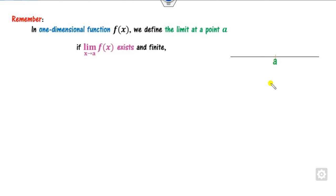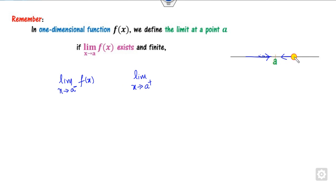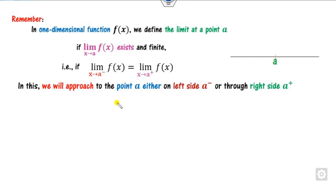We will look at a couple of examples in this presentation. The concept is: we know how to compute the limit as x approaches a of f(x). We take the limit from a minus — all points approaching from the left — and then the limit from a plus, the right-hand limit. We check whether both limits exist, are equal, and are finite; that is, we take limits from either the left-hand side or the right-hand side.